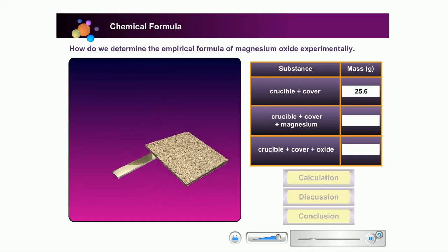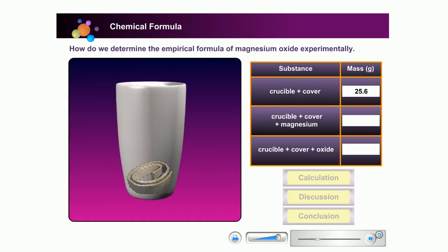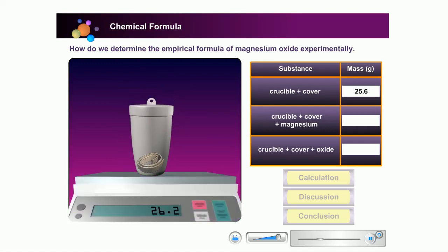Clean 5 cm magnesium ribbon with sandpaper. Roll it loosely into a coil. Place the coil in the crucible and cover it. Weigh and record the mass. Key in the mass in the table.